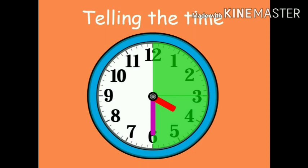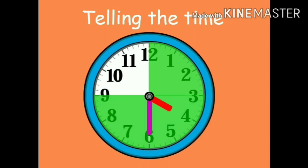When the big hand moves from the 12 to the 6, it is half past the hour. When the big hand moves from 9 to the 12, it is quarter to the hour. This is because the big hand only has a quarter of the clock face left to move to get to the next o'clock.